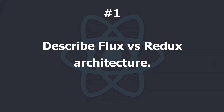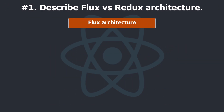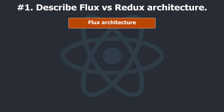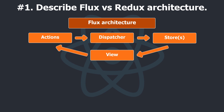Describe Flux versus Redux architecture. The Flux architecture is based on the following components: Actions, which enable data passing to the dispatcher. Dispatcher, which coordinates actions and updates to stores. Store or Stores, which serves as a container for the app state and logic. View, which displays the model in the UI in the context of React components.